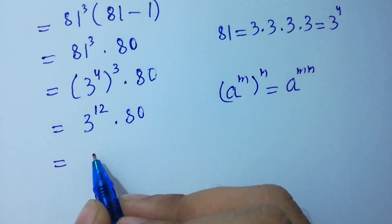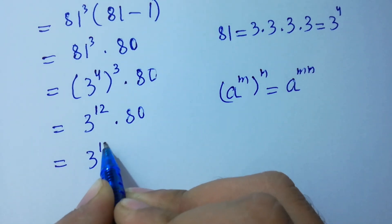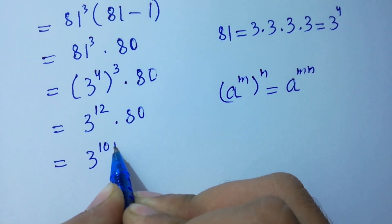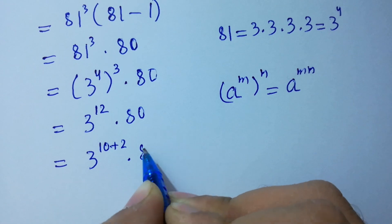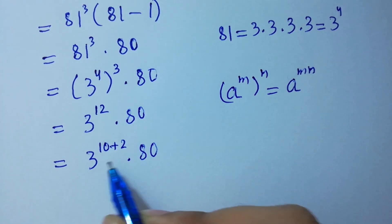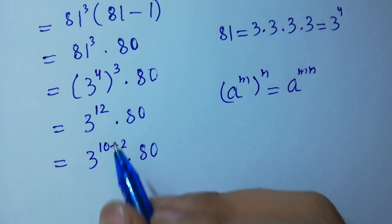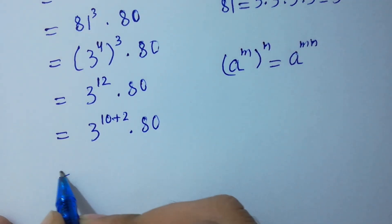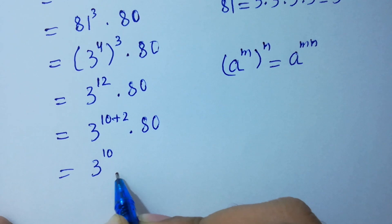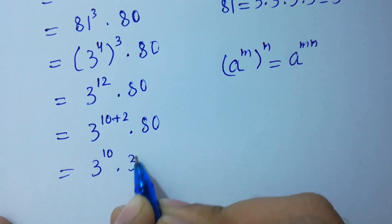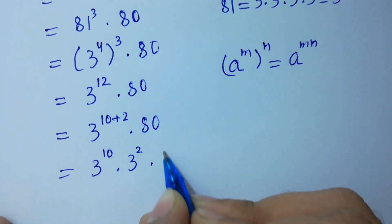This is the same as 3 to the power 10 plus 2, times 80, because 10 plus 2 equals 12. Next, we have 3 to the power 10 times 3 to the power 2, times 80.